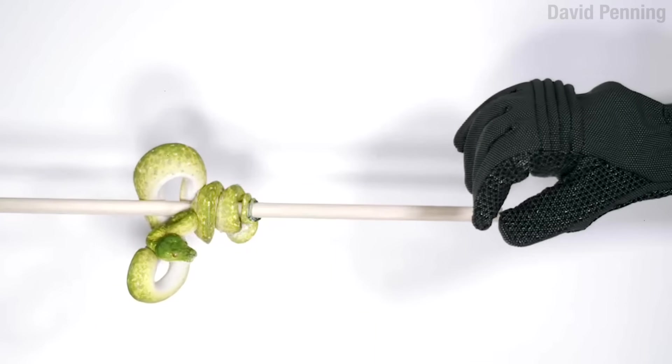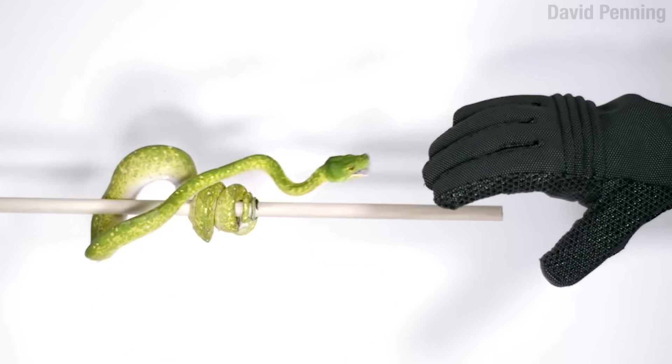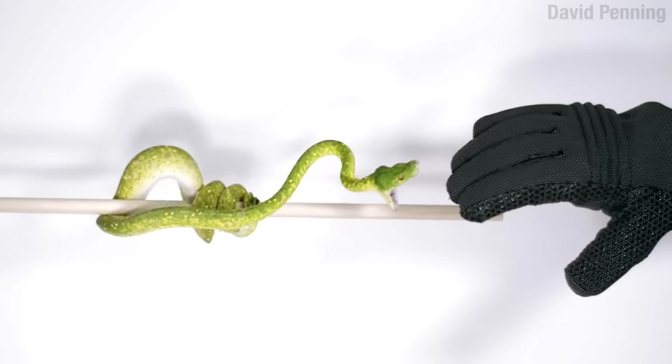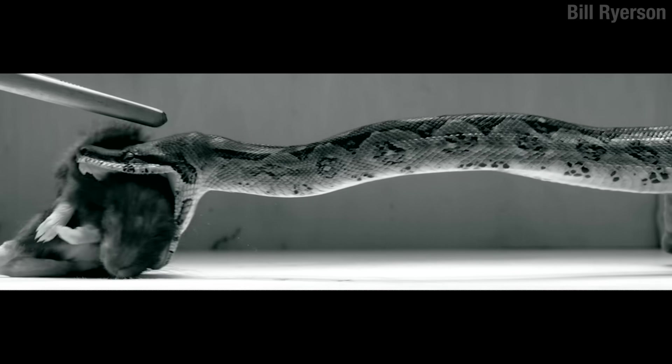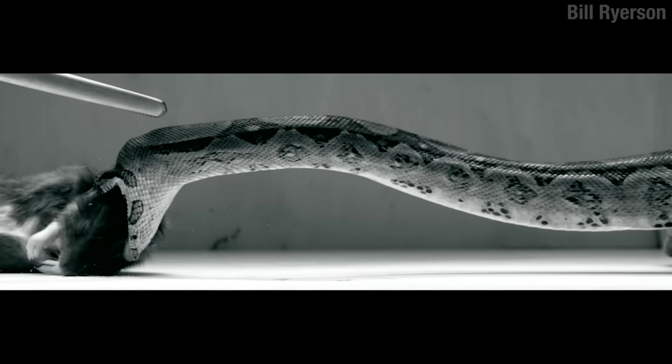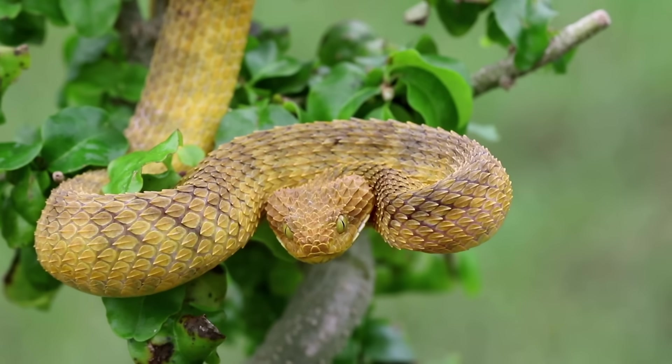Whether it's on the hunt or in defense, it happens incredibly quickly. A snake has between 10 and 15,000 muscles, and it uses them to essentially hurl its head forward, sometimes reaching its target in less than 70 milliseconds.